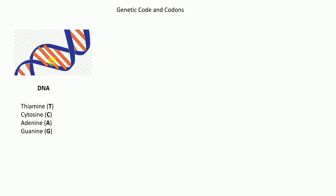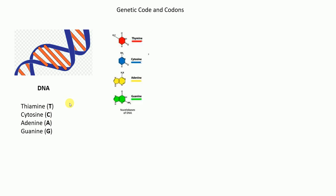DNA is a double helical structure, and the nucleotide bases present in DNA are thymine, cytosine, adenine, and guanine. G, C, A, and T form this double helical structure. The structure shown here illustrates thymine, cytosine, adenine, and guanine — A, G, C, T — these are the nucleotide bases of DNA.